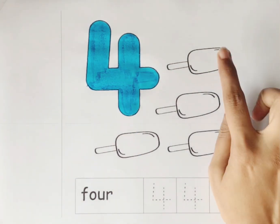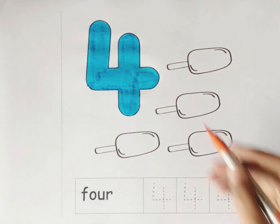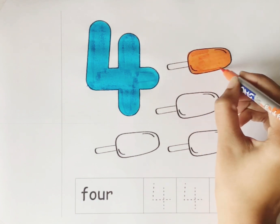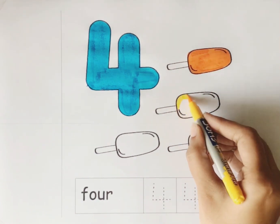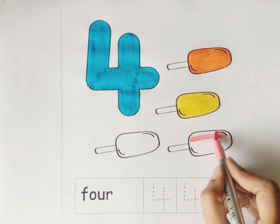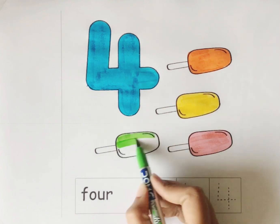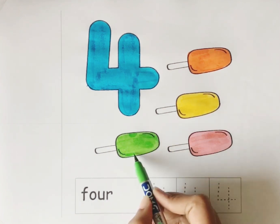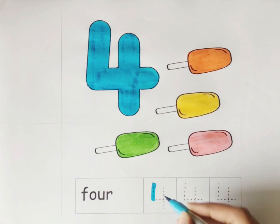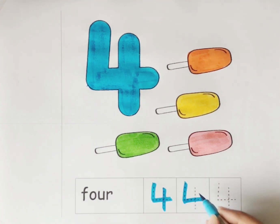Let's count the total number of hearts: 1, 2, 3, and 4. We have 4 hearts. Orange color. Yellow color. Baby pink color. Light green color. Let's trace the number 4.